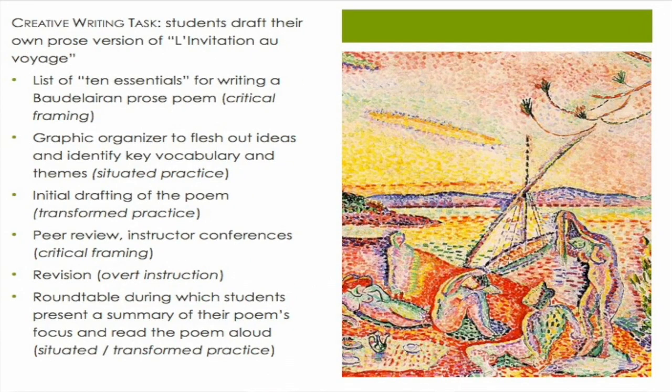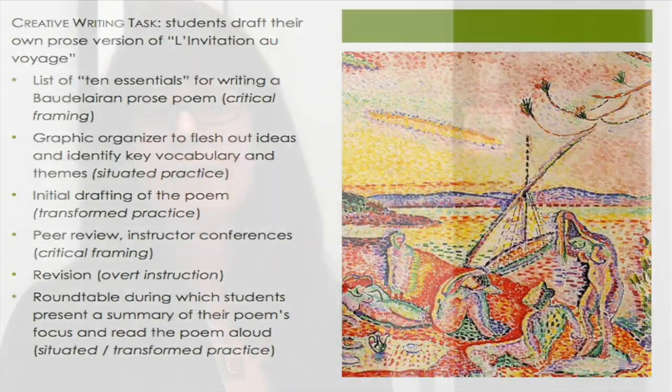The example I'm going to talk about is from the poem L'invitation au Voyage. Students did a whole module on the prose and verse versions of this poem. The module began with students looking at a painting by Matisse called Luxe, Calme et Volupté, which is a line from the poem. Students brainstorm what they think the verse poem is going to be about, do various activities analyzing the verse poem, watch an animated version, and then read the verse poem and do a genre comparison between the prose and verse poem.